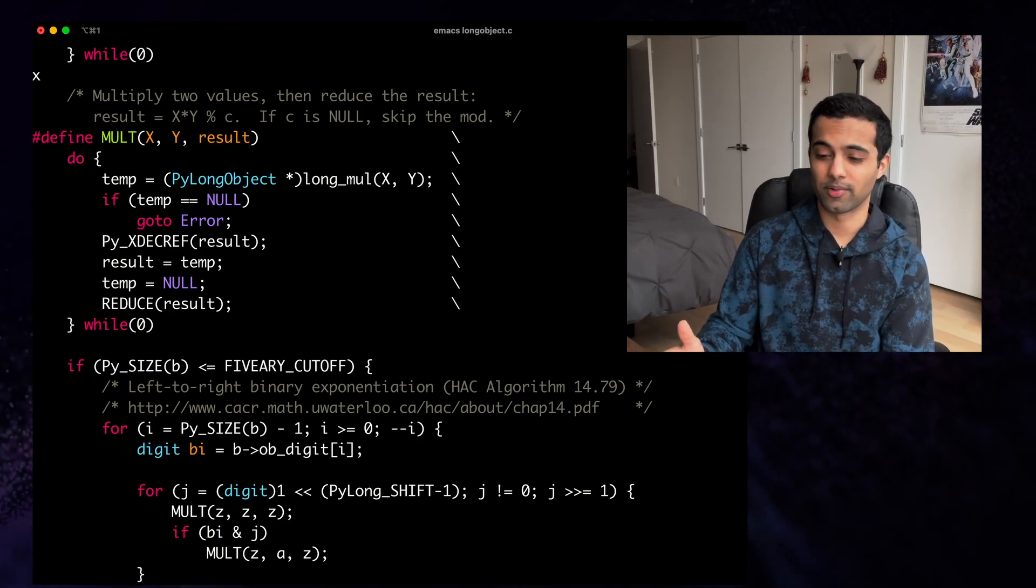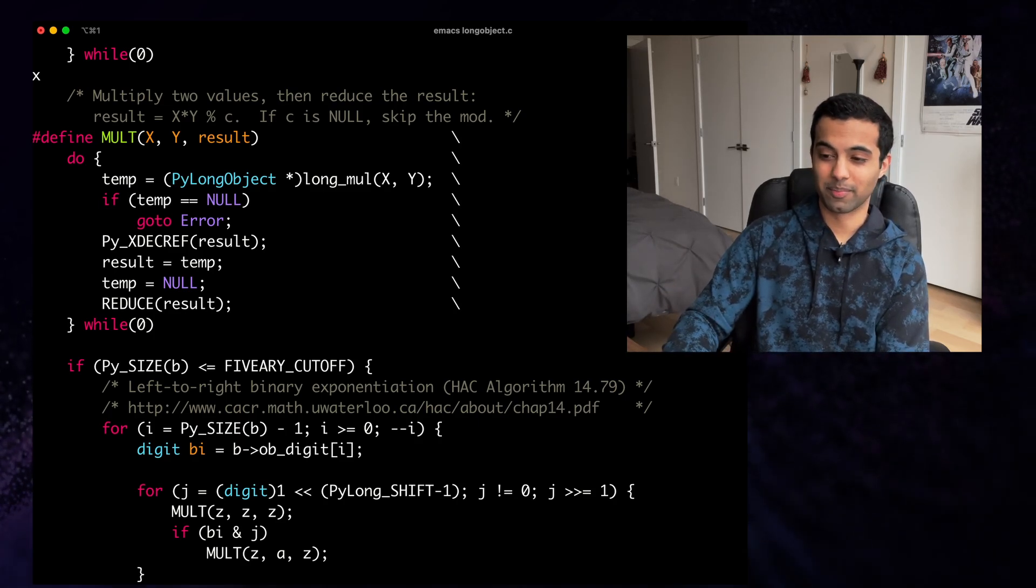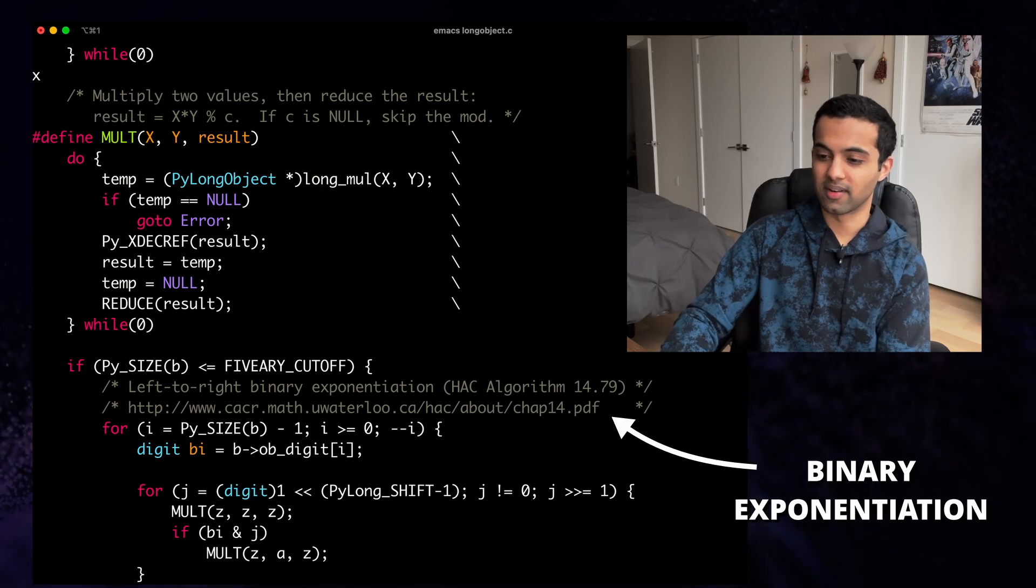and this is where the mystery starts to unravel. This code looks a bit confusing, but the comment mentions an algorithm called binary exponentiation. Let's walk through this a bit more visually to see what's going on.